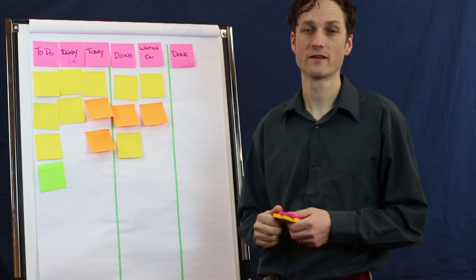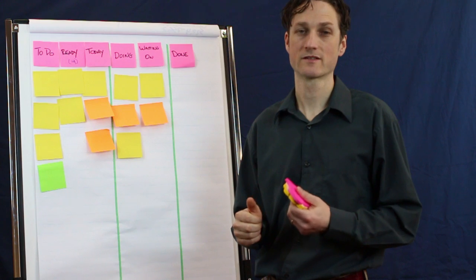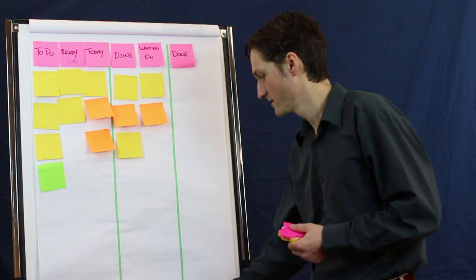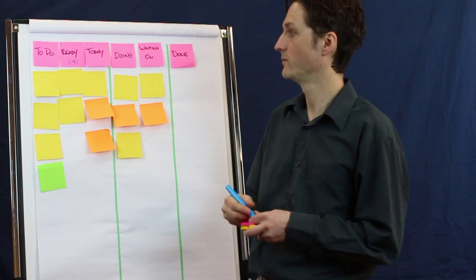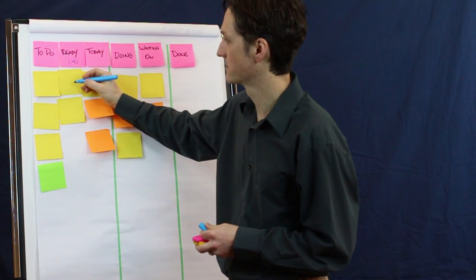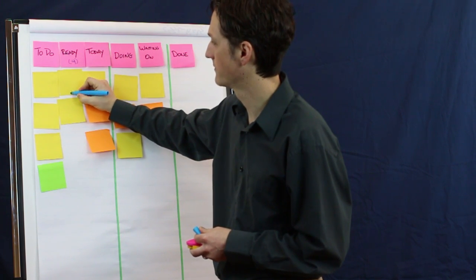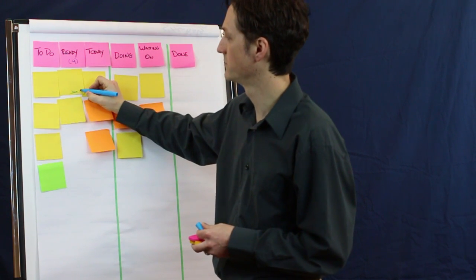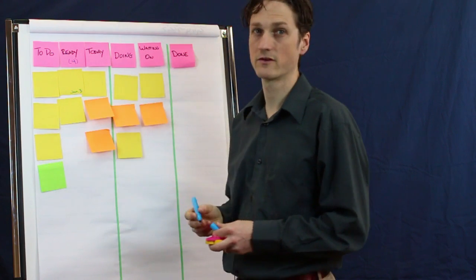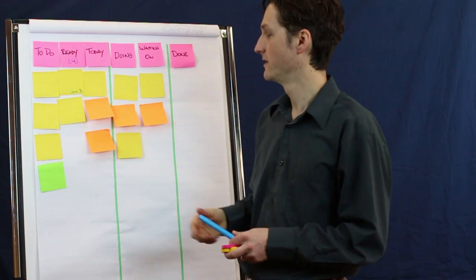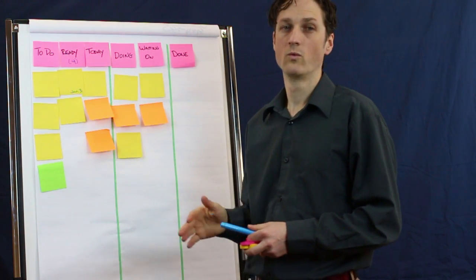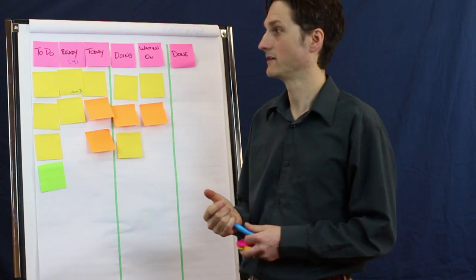Also, for things like tasks that have a fixed date, you can annotate them with the date right on the post-it. For example, this one is due June 3rd, so I can just add that to my post-it. I can visually see again which post-its have this fixed date deadline.